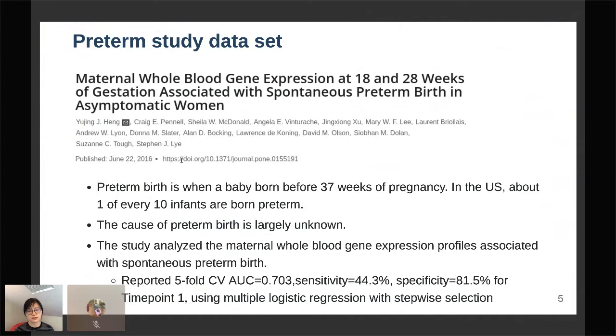The cost of preterm birth is largely unknown, but the health outcomes are pretty severe. The babies sometimes need to stay in the hospital for over six months. They used a very simple multiple logistic regression with stepwise selection and they didn't have a test set. They reported the five-fold cross validation AUC to be equal to 0.703 for the gene expression data alone at time point one.